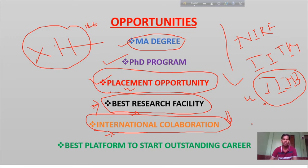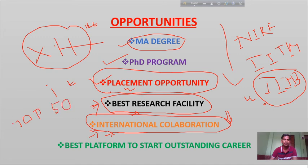If you complete your MA degree from IIT Bombay, you will be able to pursue your PhD from universities like Cambridge University, Harvard University, Monash University, many UK-based universities, and Australia-based universities — all of which are among the top 50 best universities in the world.